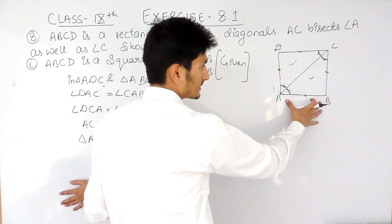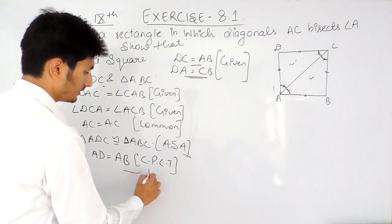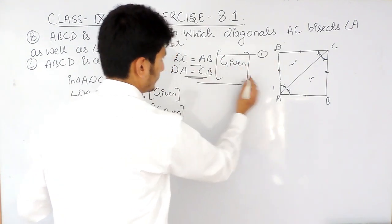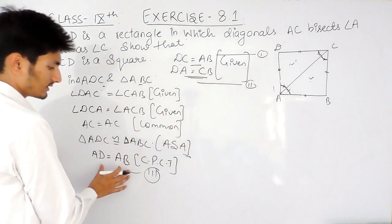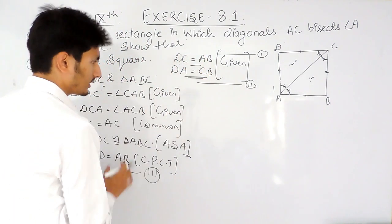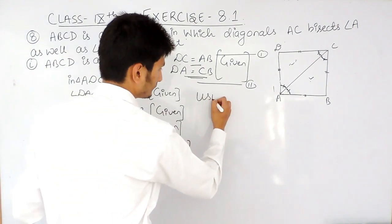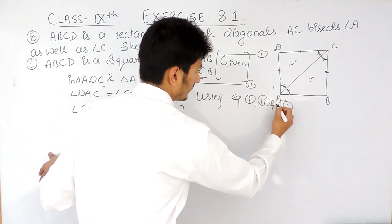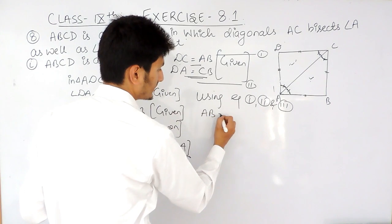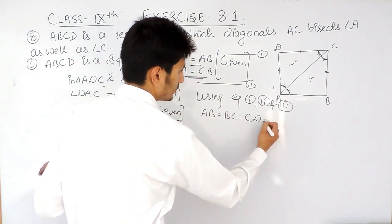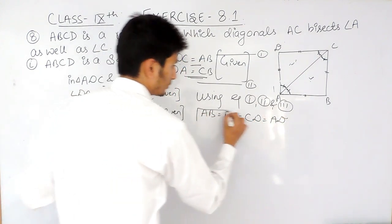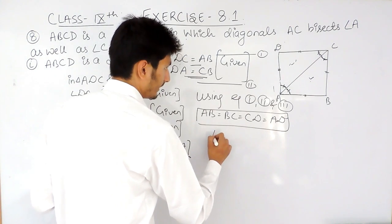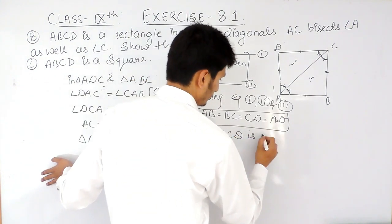Using equation 1 (DC = AB), equation 2 (DA = CB), and equation 3 (AD = AB) together, we can conclude that all four sides — AB, BC, CD, and DA — are equal. Since all four sides are equal, ABCD is a square.